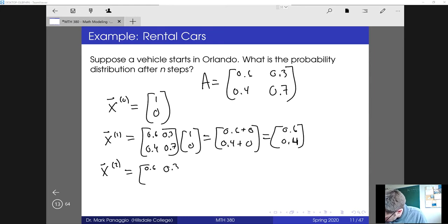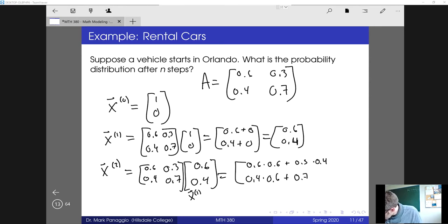So I'll take 0.6, 0.3, 0.4, 0.7. I will multiply by my state vector at time 1, which is 0.6, 0.4. And again, since this has all the transition probabilities, I'm accounting for all possible outcomes. And multiplying together, we'll have 0.6 times 0.6 plus 0.3 times 0.4. And in the second row, we'll have 0.4 times 0.6 plus 0.7 times 0.4, which is going to be equal to, let's see, 0.36 plus 0.12, so 0.48. And 0.24 plus 0.28, so 0.52, which means after two days, two steps, there's a 48% chance that the car is still in Orlando or ends up at Orlando at that point. And then there's a 52% chance that the car ends up in Tampa.